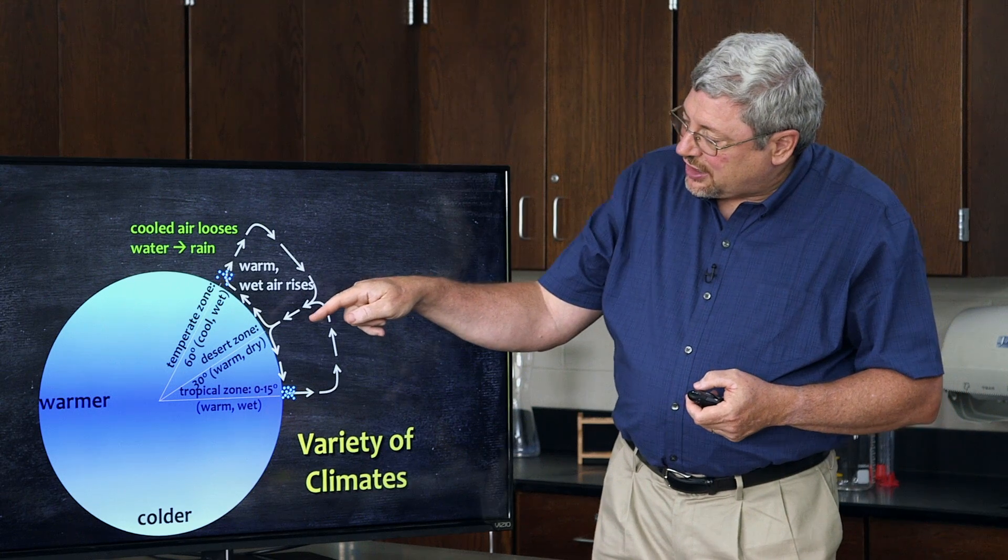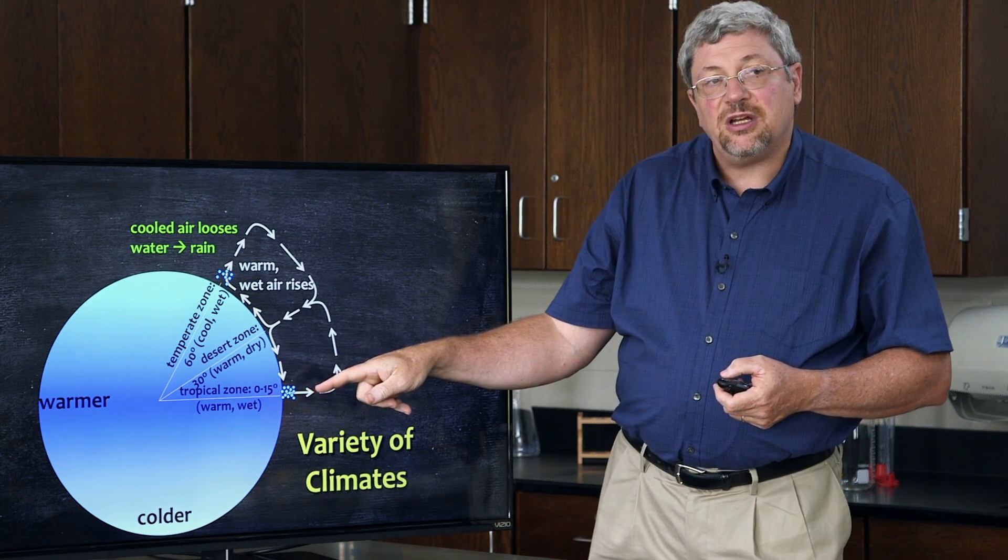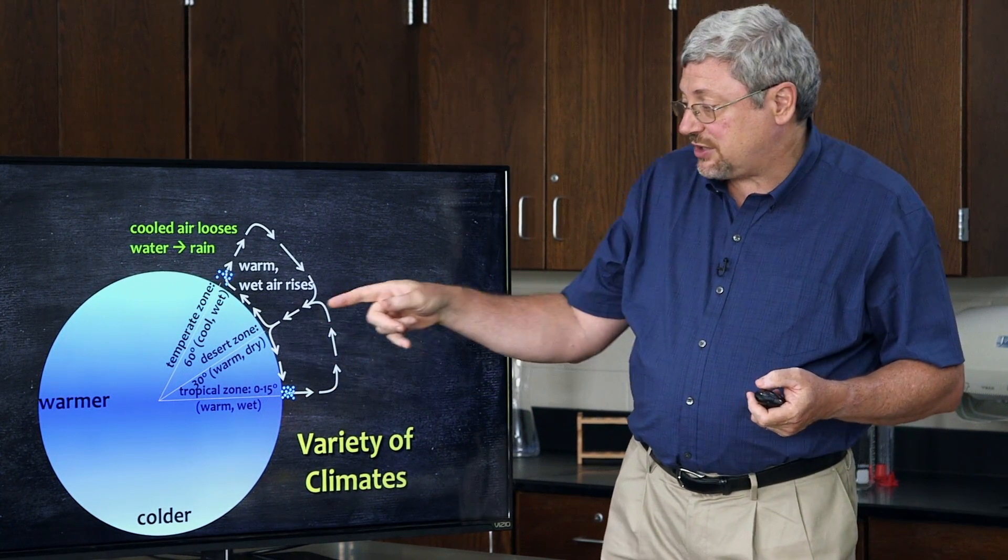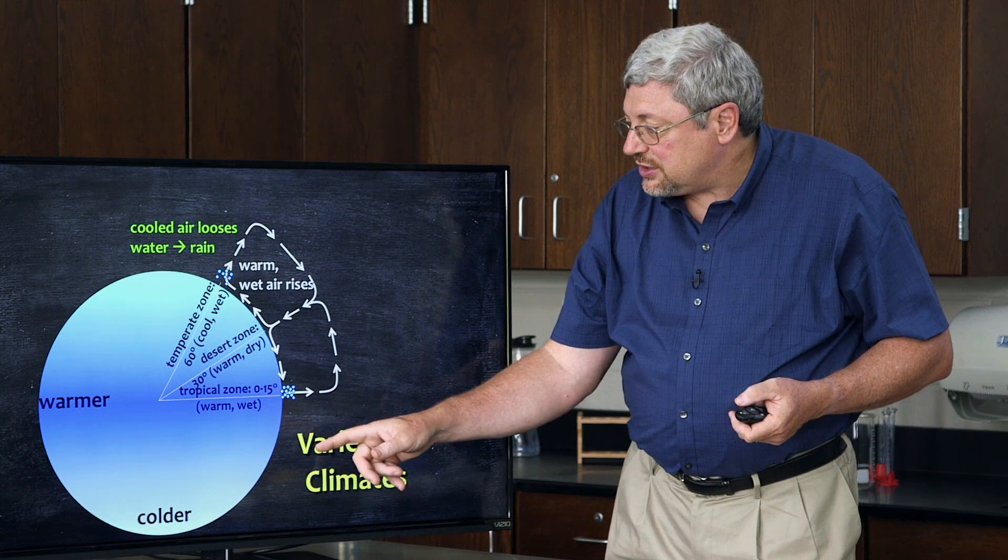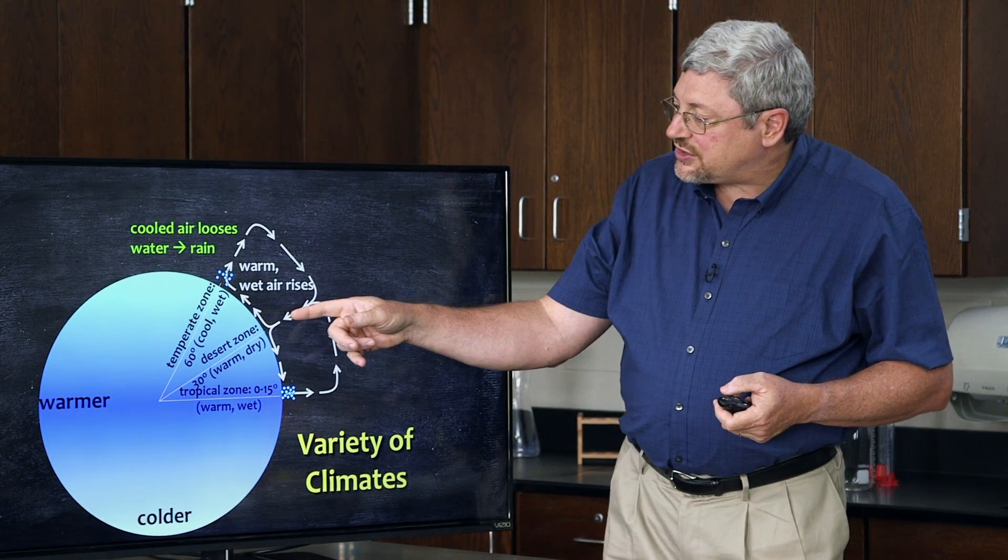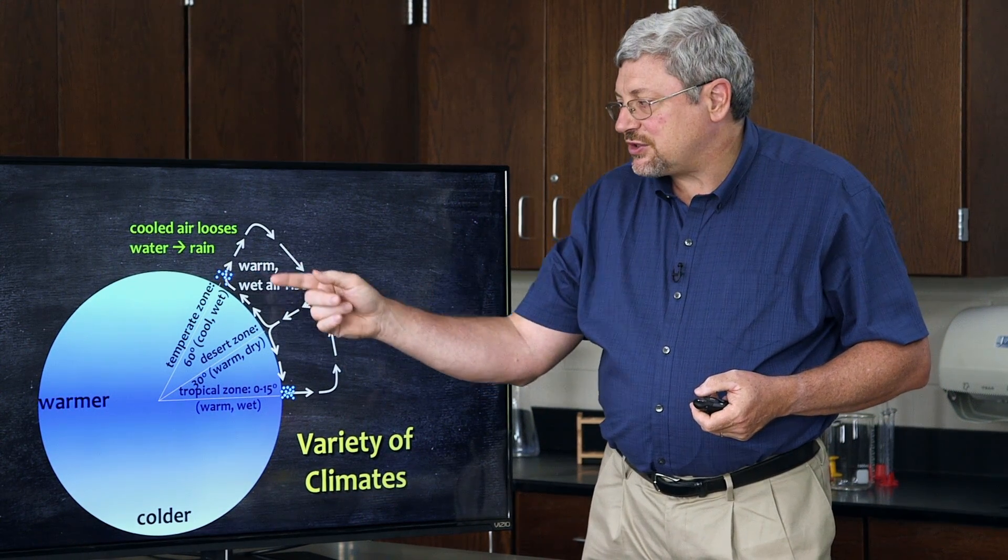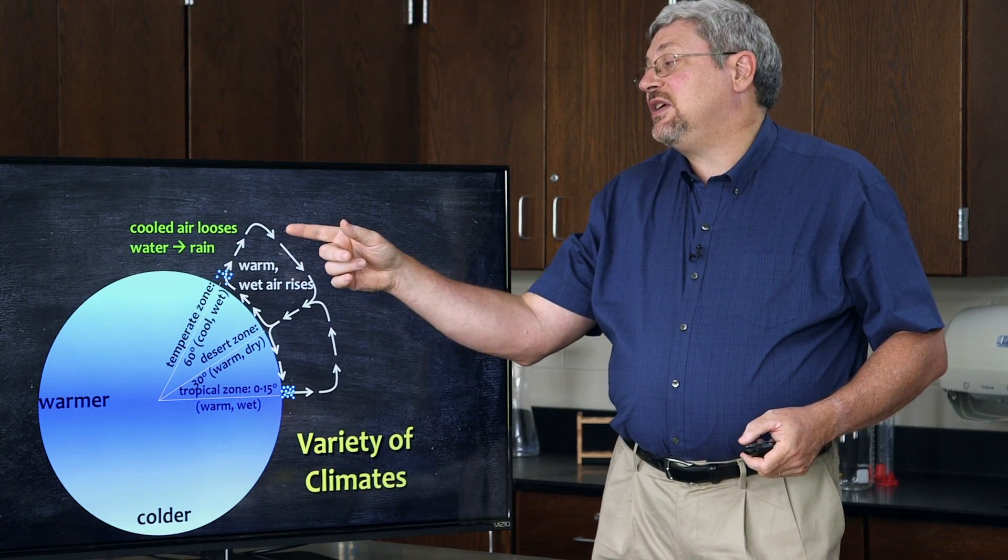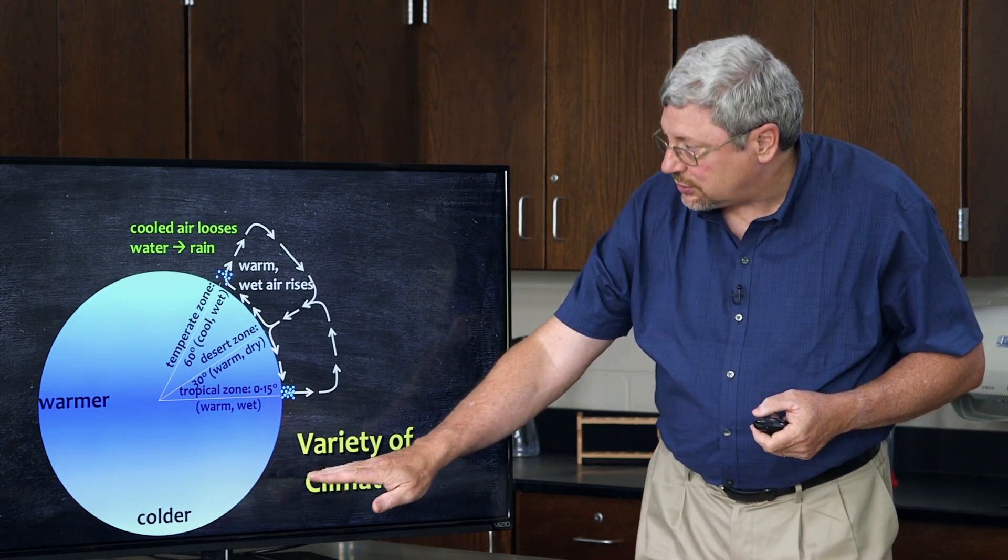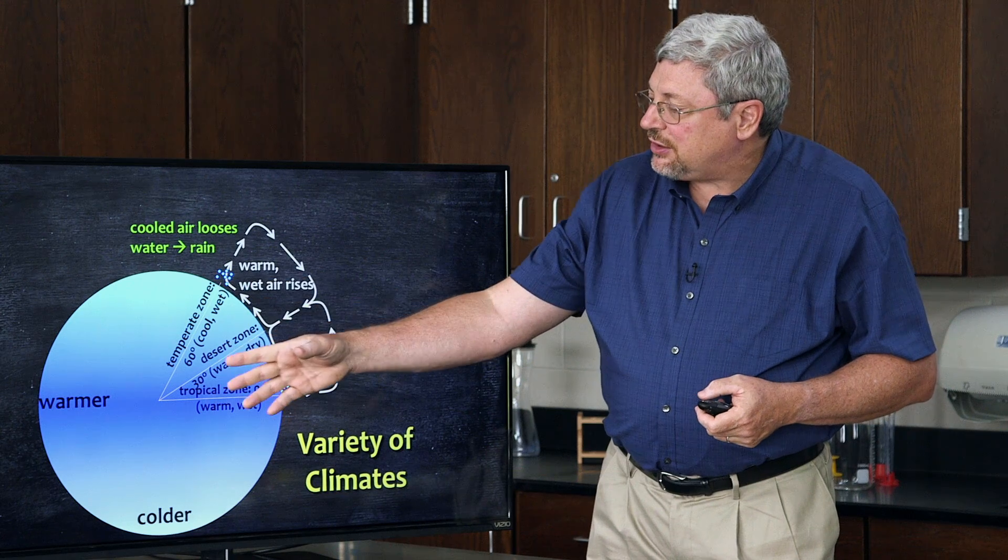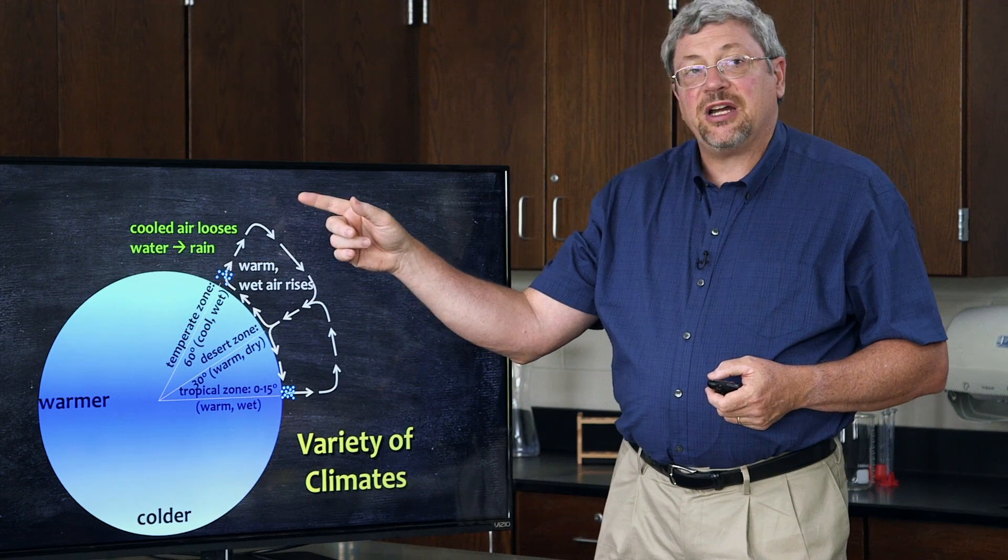The air that comes down at 30 degrees north and south splits. Some of the air goes back to the tropics to in fact replace the air that's rising at the tropics, creating a cycle of air rising at the tropics, dropping at 30 degrees north and 30 degrees south latitude. The rest of the air moves along the surface of the earth and will ultimately get warmed as it moves along the surface of the earth, become warm enough to rise again, and again come back and replace the air that's sinking at 30 degrees north, 30 degrees south. The air gets to about 60 degrees north latitude and south latitude when it gets warm enough to rise up into the atmosphere.